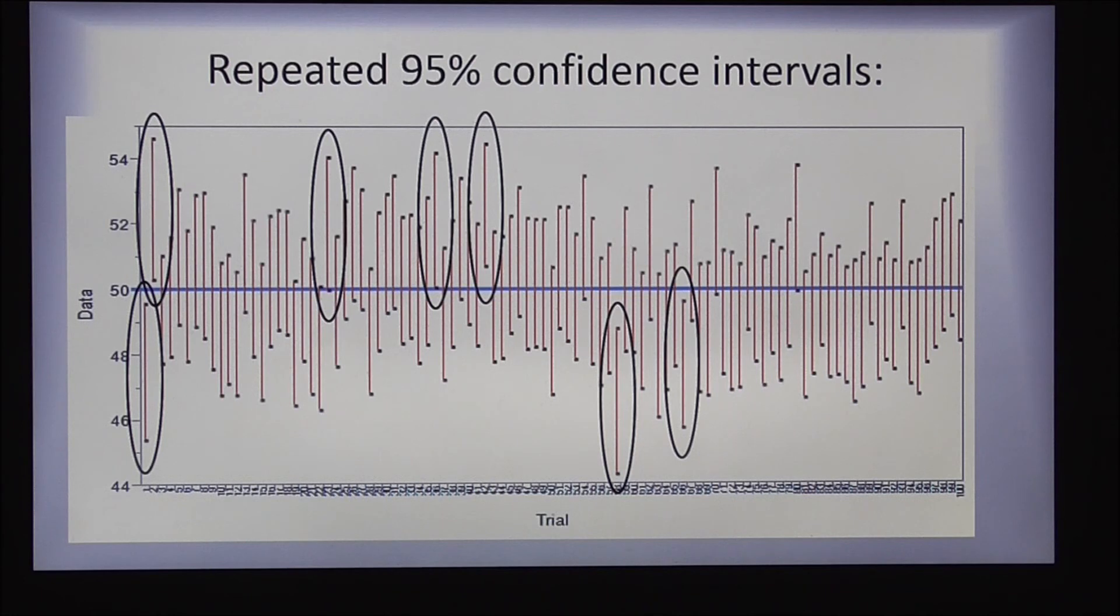bear in mind that that 95% is also a random variable and therefore subject to variation. So, for example, in this time, when I did a hundred different confidence intervals, only 93% of them contained the true mean. If I were to do it again, maybe I would get 96 or 97 or 98%. Who knows? But it's a random variable. And as you can see, most of the time, the 95% confidence interval will contain the true mean, whereas sometimes it won't.